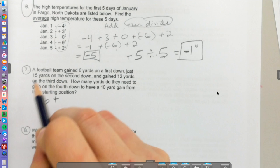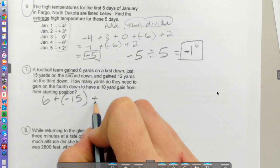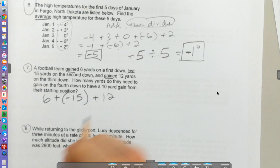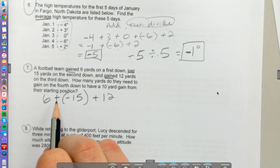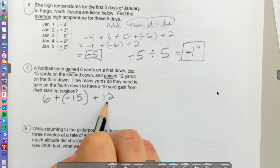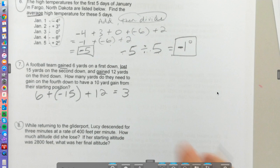Gain represents a positive number. Then on the first down they lost 15 yards so it'll be a negative number. Then on the third down they gained again 12 yards so that's another positive number. So a positive 6 plus a negative 15, that'll be -9. -9 plus a positive 12, that'll be just a 3.